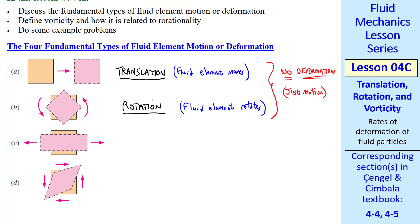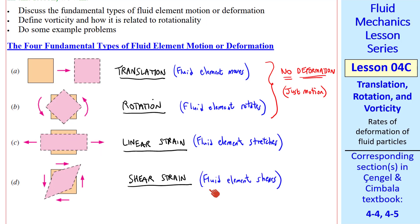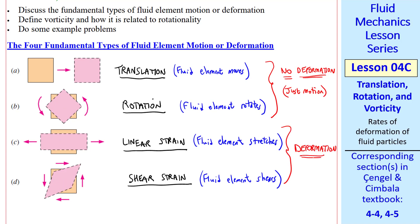The last two involve deformation. We can have linear strain, in which the fluid element stretches. Here I show it stretching in the horizontal direction only, but it can stretch in any arbitrary direction. Finally, we have shear strain, in which the fluid element shears. We can see shearing going on in this case. We drew all of these in the 2D plane, but you can imagine these motions and deformations occurring three-dimensionally as well. These last two do have deformation.